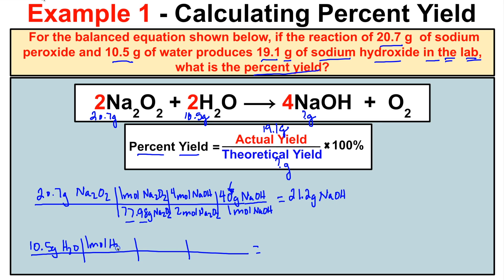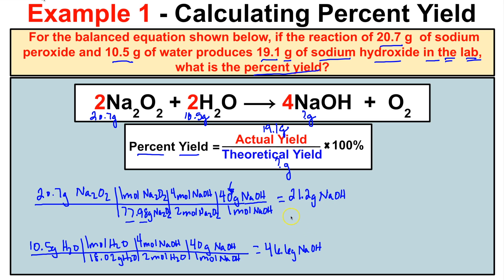Now for water: 10.5 g ÷ (18.02 g/mol H₂O) × (4 mol NaOH / 2 mol H₂O) × (40 g/mol NaOH) = 46.6 grams of NaOH. Since we're given both reactants, we go with the lower of the two values. Sodium peroxide gives 21.2 grams, which is lower, so sodium peroxide is the limiting reactant and 21.2 grams is our theoretical yield.